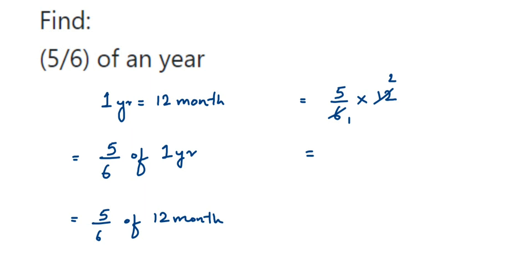And we have one in the denominator, but that will not change the value of the number. You can write it down as 10 upon 1 or simply 10. So 10 months will be the answer. Five-sixths of the year is 10 months.